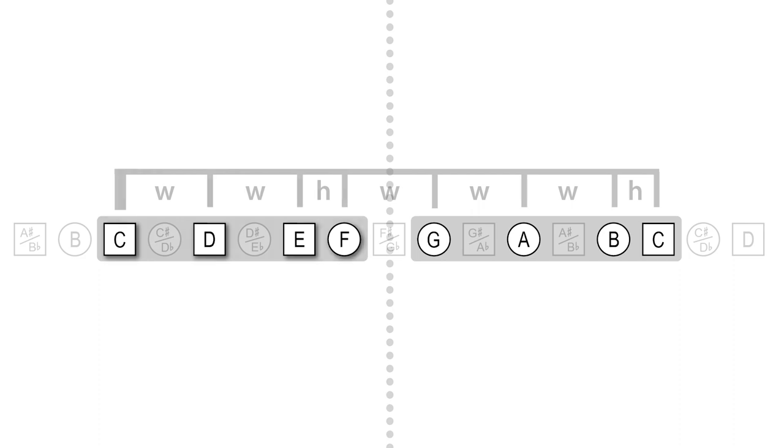C, D, E, F, that's the first half, then G, A, B, C, that's the second half. These two halves are just separated by a whole step in the middle. And this mini pattern of intervals is repeated to play the full scale. One, two, three, four, that's the first half, five, six, seven, eight, that's the second half.